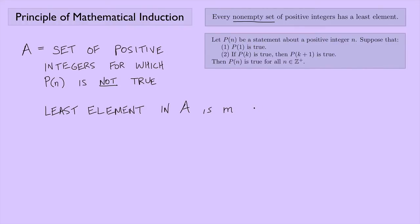Since P(1) is true — the first condition of mathematical induction — M cannot be 1. Because if M were 1, that would contradict P(1) being true, since M is in the set A of things for which P(n) is not true. So M can't be 1.